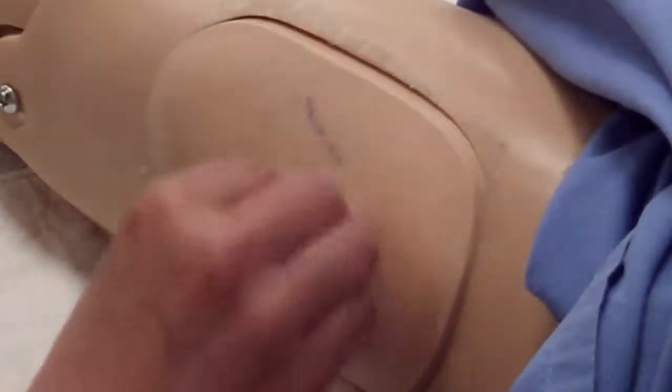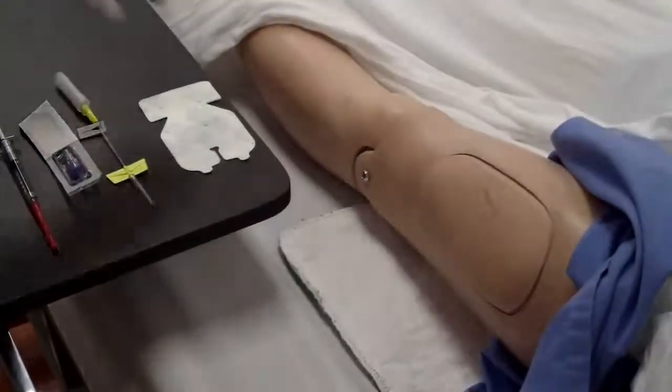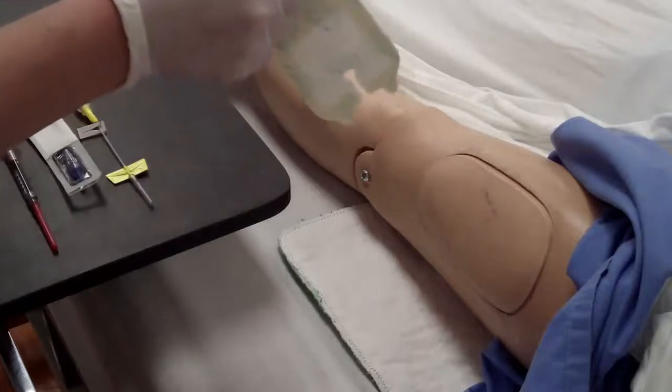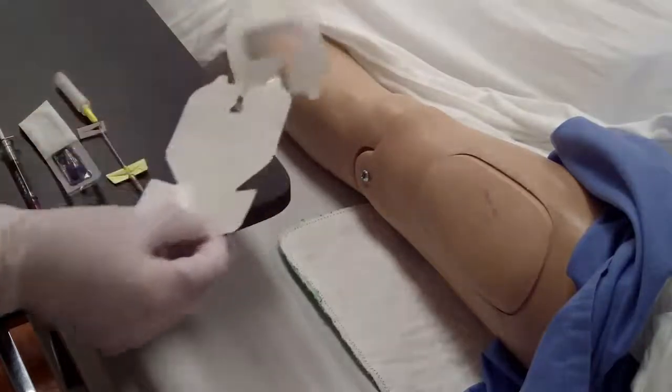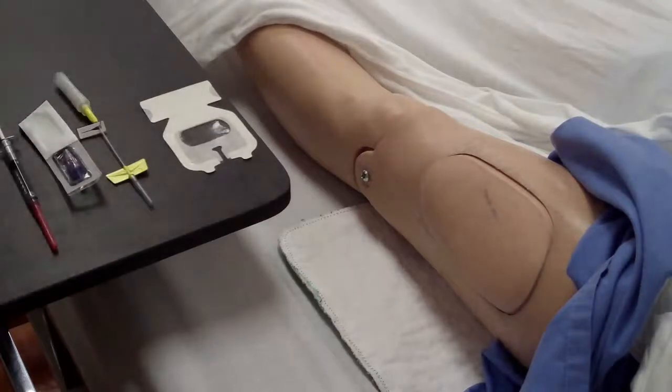When you have determined the best location for the subcutaneous butterfly, ensure that you give the area a good clean with alcohol and allow to dry. While the alcohol is drying, ensure that you do some hand hygiene and don some gloves. You can start by removing the backing to the dressing.